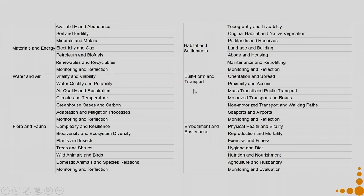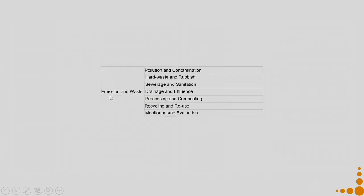Then built form and transport: orientation and spread, proximity and access, mass transit and public transport, motorized transport and roads, non-motorized transport and walking paths, seaports and airports, and monitoring and reflection. The sixth is embodiment and sustenance: physical health and vitality, reproduction and mortality, exercise and fitness, hygiene and diet, nutrition and nourishment, agriculture and husbandry, and monitoring and evaluation. The final one is emissions and waste: pollution and contamination, hard waste and rubbish, sewerage and sanitation, drainage and effluence, processing and composting, recycling and reuse, and monitoring and evaluation.